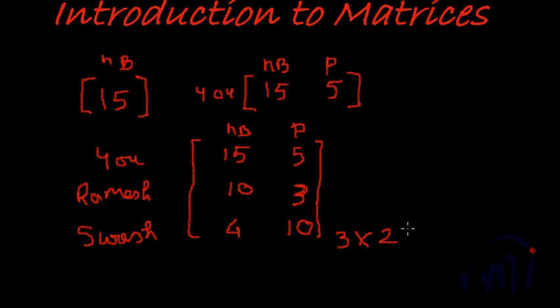Now let's take a closer look at this matrix and see what else we can learn. The number 15 represents the number of notebooks that you have. Similarly, the number 4 represents the number of notebooks that Suresh has.